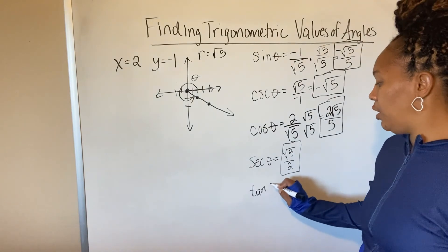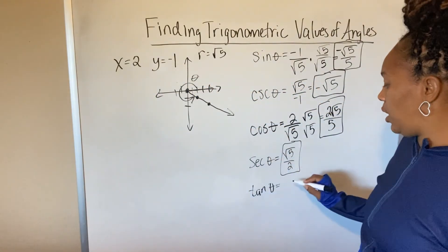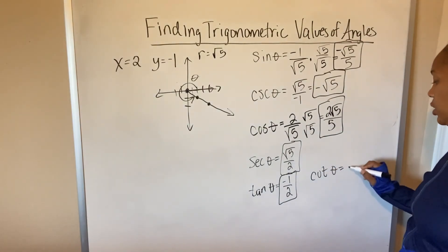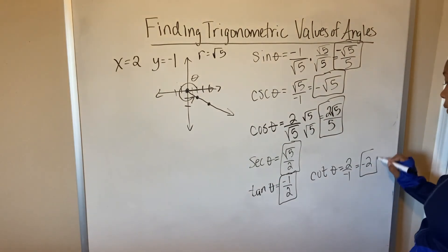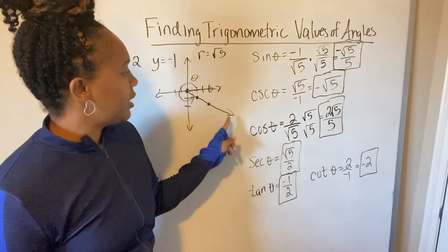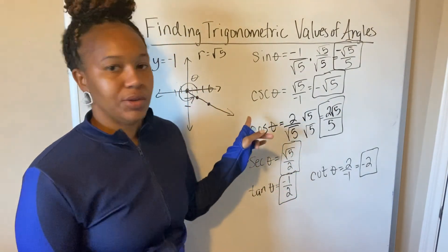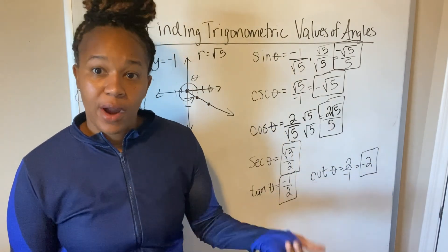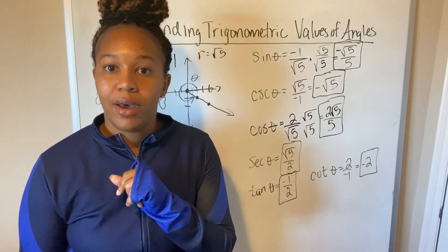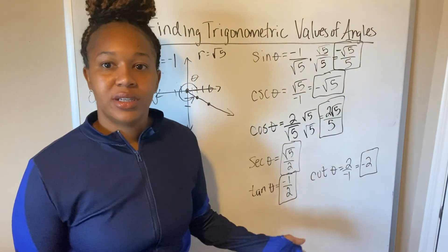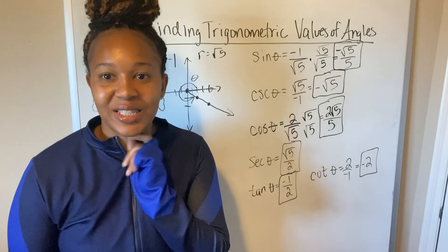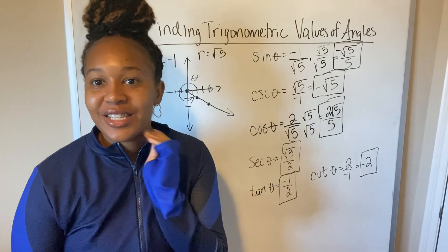Tangent of theta is y over x, which is negative 1 over 2. Cotangent, the reciprocal of tangent, is 2 over negative 1, which equals negative 2. These are your six trigonometric functions for this angle. You need to solve for y to get an (x, y) point on the line, find r, and then calculate the six trig values. Let me know if you have any questions in the comments below, and if you haven't already, hit that subscribe button. Thanks for watching, and I'll see you in the next video.